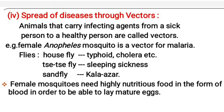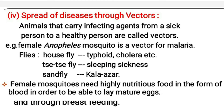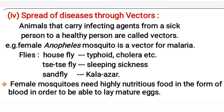Spread of diseases through vectors: animals that carry infecting agents from a sick person to a healthy person are called vectors. For example, the female Anopheles mosquito is a vector for malaria.